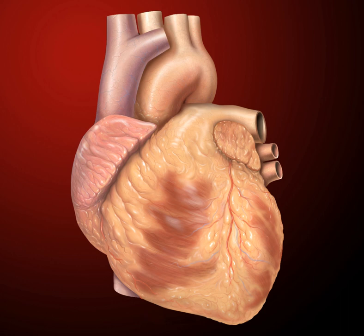When the right atrium contracts, the blood is pumped through the tricuspid valve into the right ventricle. As the right ventricle contracts, the tricuspid valve closes and the blood is pumped into the pulmonary trunk through the pulmonary valve. The pulmonary trunk divides into pulmonary arteries and progressively smaller arteries throughout the lungs, until it reaches capillaries, where carbon dioxide is exchanged for oxygen through the passive process of diffusion. In the left heart, oxygenated blood is returned to the left atrium via the pulmonary veins, then pumped into the left ventricle through the mitral valve and into the aorta through the aortic valve for systemic circulation.